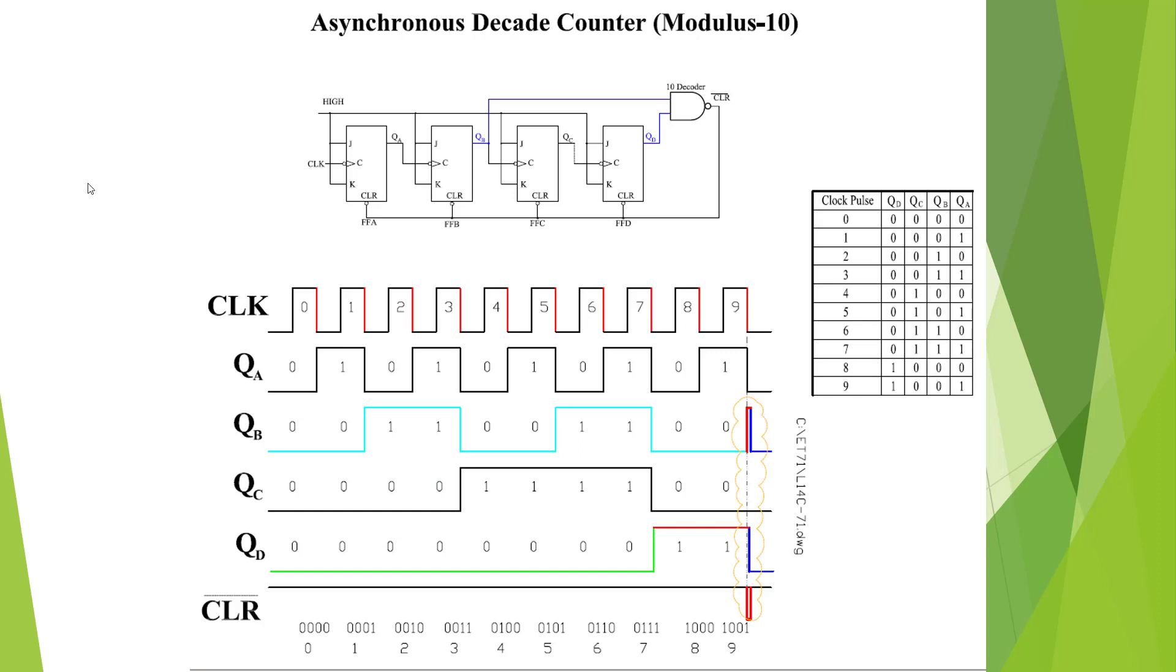This is an asynchronous decade counter. Mod 10. Divide by 10 counts from 0 to 9 based on an asynchronous.